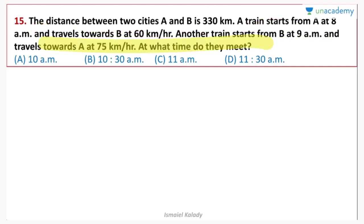Let's discuss relative speed. When two objects are going in the same direction, we take the difference of their speeds. When two trains are going in the opposite direction, we take the sum of their speeds as the relative speed.